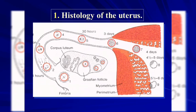The endometrial glands are tortuous during certain phases of the cycle. We can see that the glands change during the cycle. Here we can see the ovulation — this is called the Graafian follicle — and then after ovulation, it will be called the corpus, formed from the ruptured mature Graafian follicle.